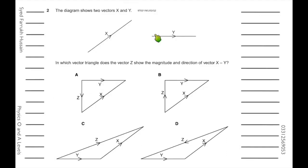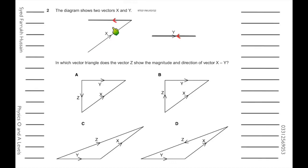The next question involves vector subtraction: X minus Y. To find X minus Y, you add minus Y to X. X is already drawn, so draw minus Y from the head of X. The resultant is from the tail of the first vector to the head of the second. This resultant is Z.